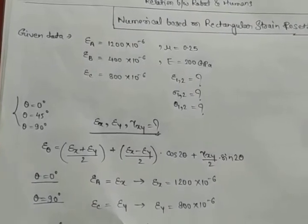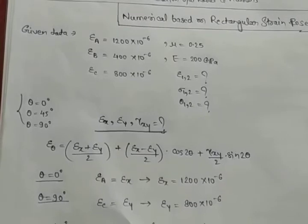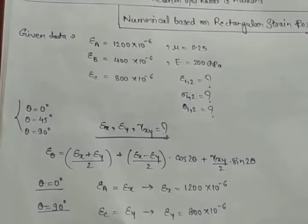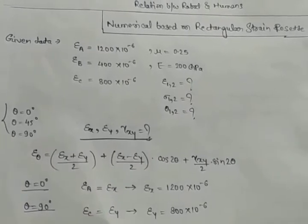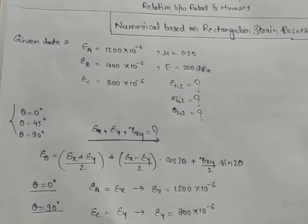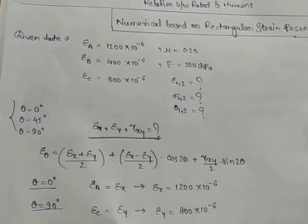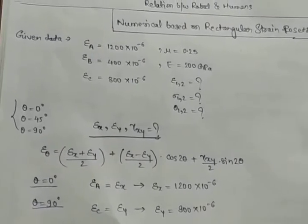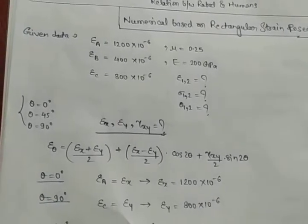Now we have to find out three values: epsilon_1,2 (principal strains), sigma_1,2 (principal stresses), and theta_1,2. This is an overall rectangular strain rosette problem, where the theta values given are 0°, 45°, and 90°. Using these three angles, we will first find epsilon_x, epsilon_y, and shear strain gamma_xy.